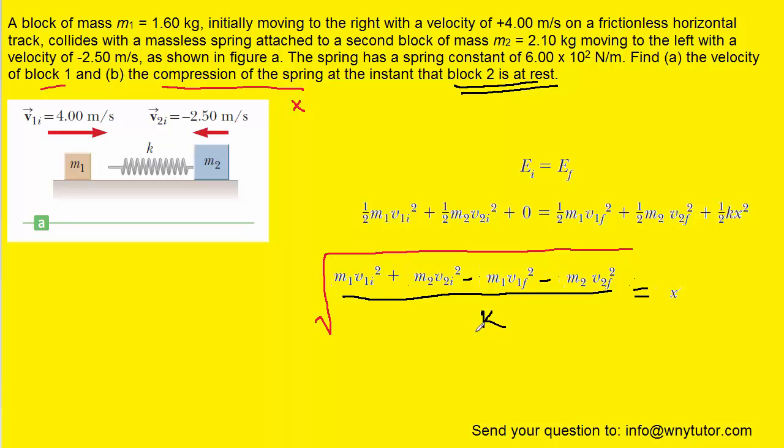Now all we have to do is plug in the known values very carefully. Remember we know m1 and m2. We also know the initial velocity of block one and the initial velocity of block two. The final velocity of block one was calculated in part A of this question. Let's not forget that that value was positive 0.719. And then the final velocity of block two was actually zero since that block was at rest. So that's going to actually eliminate this entire term. So we'll go ahead and plug in the known values.